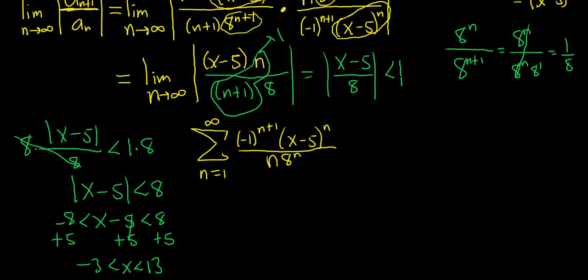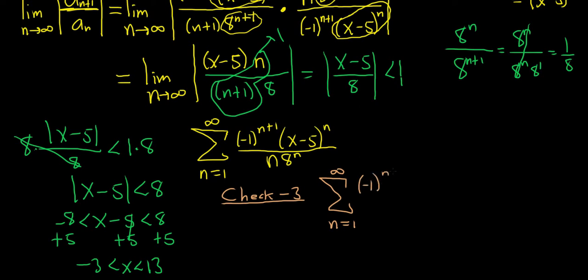Let's check the endpoint x = negative 3 first. We plug negative 3 in for x, so we get the infinite sum from n=1 to infinity of negative 1 to the n+1, times negative 3 minus 5 — which is negative 8 — to the n, over n times 8 to the n.